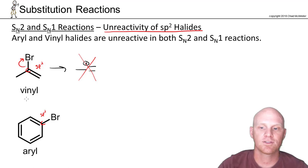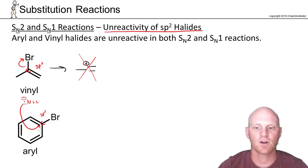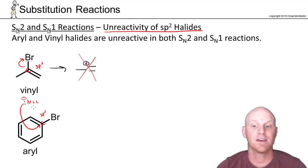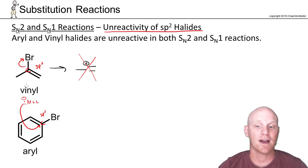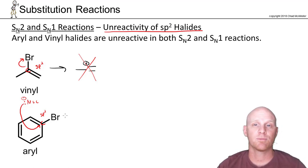You're also not going to do SN2, and the reason here is different. If you've got a good strong nucleophile and try to do backside attack on this carbon, the pi electrons are going to repel that nucleophile, keeping it from doing backside attack. So backside attack is completely blocked — you can't do SN2 either. Can't form a good carbocation, so no SN1. Can't do backside attack, so no SN2.